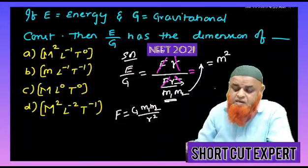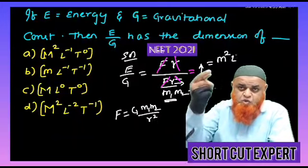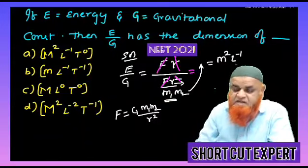This R comes to the numerator. It becomes L here. L comes to numerator means L power minus 1. That's it.